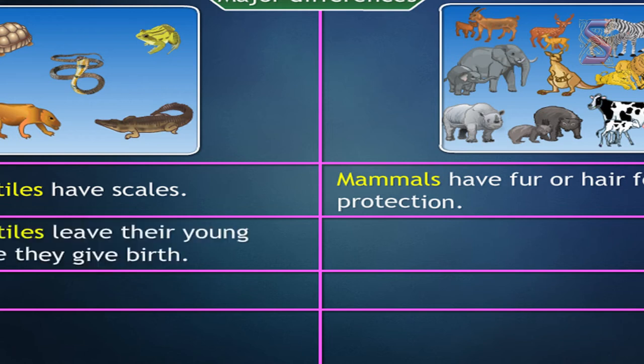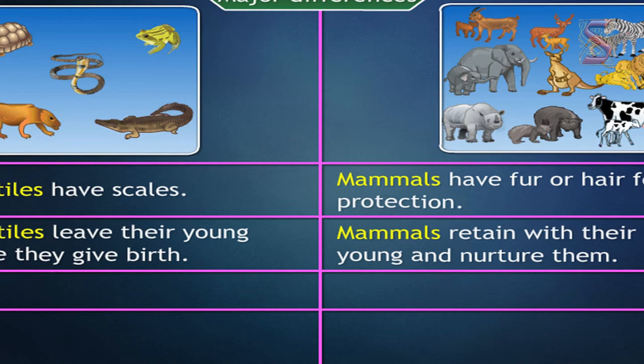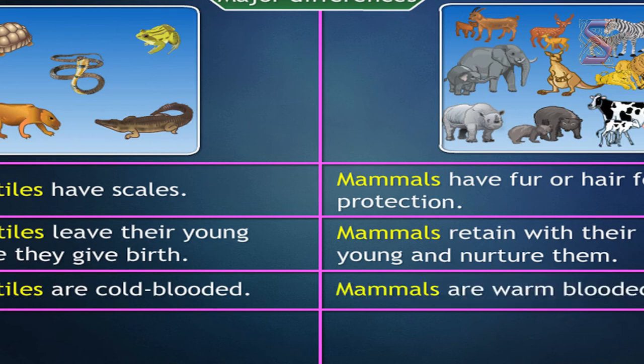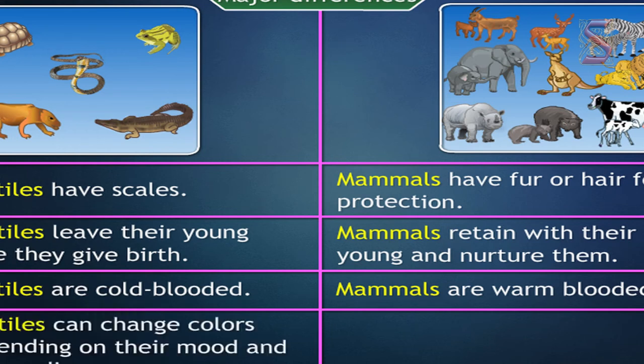Reptiles leave the young ones after giving birth, while mammals stay with the young ones and nurture them. Reptiles are cold-blooded while mammals are warm-blooded. Reptiles can change colors depending on their mood and surroundings, while mammals retain the same color.